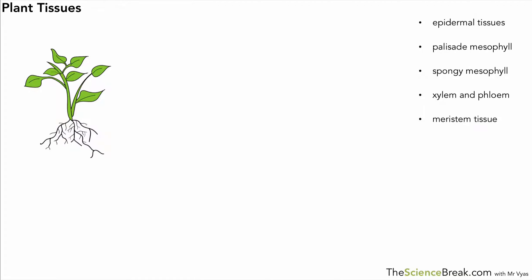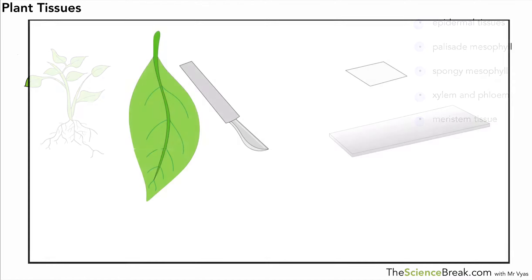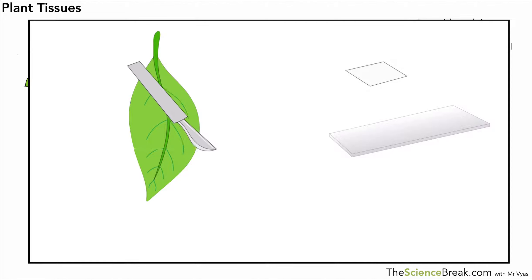Today we're going to look at plant tissues. The ones we're going to focus on are listed on the right hand side: epidermal, palisade mesophyll, spongy mesophyll, xylem, phloem, and meristem tissue. The best place to see most of these would be in a leaf.